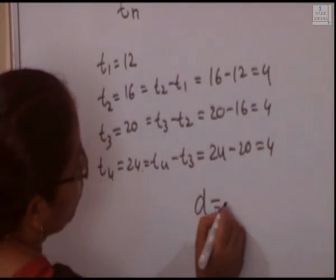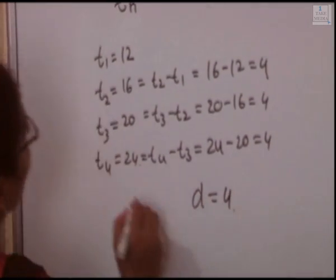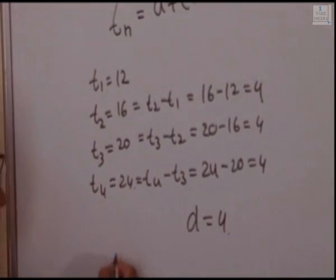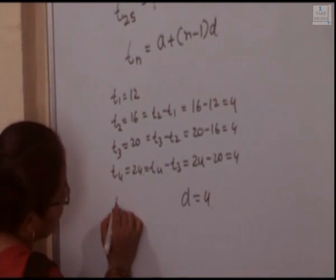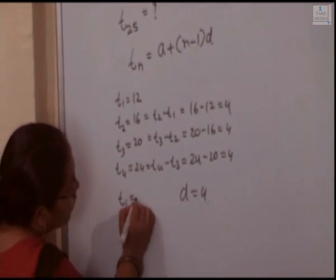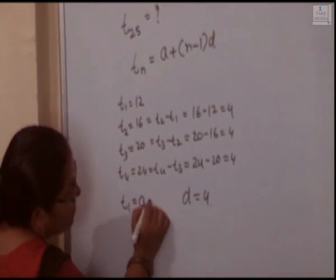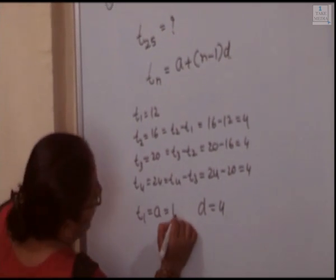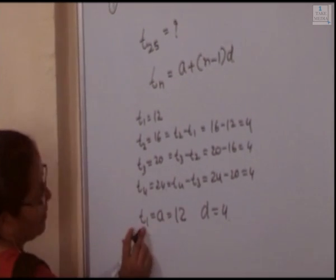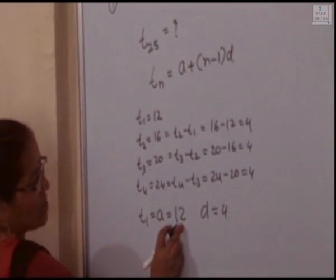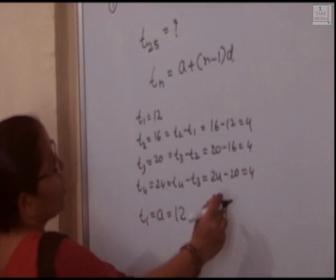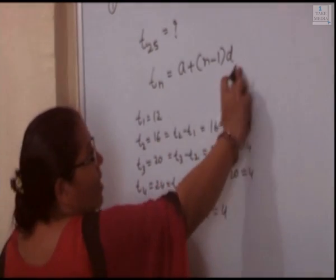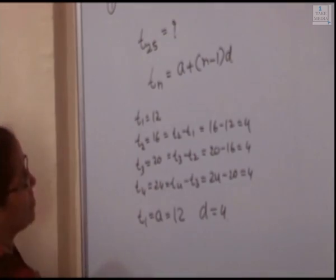Here D equal to 4. The first value is always T1 equal to A, so the first value is 12. Here A value is 12 and D is 4. We will substitute these values into the equation.